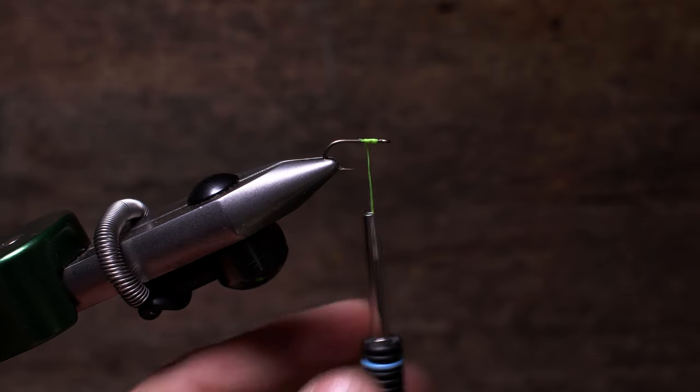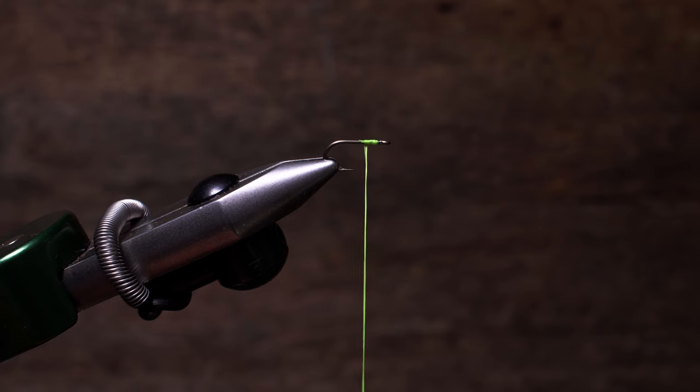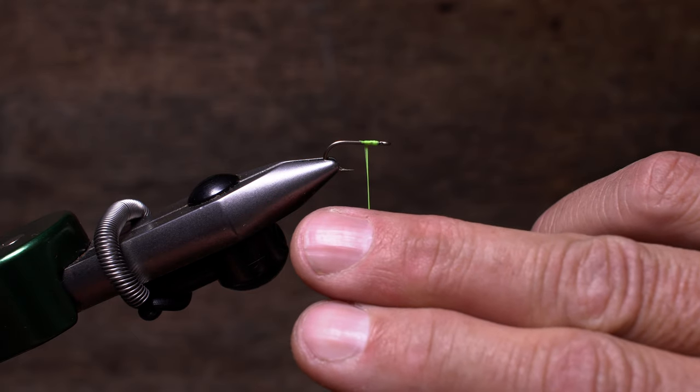Start by pulling down on your bobbin to expose about 4 inches of thread. Lay the tips of your index and middle fingers on top of the thread just down from the hook.